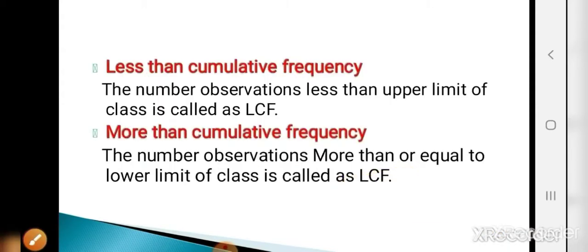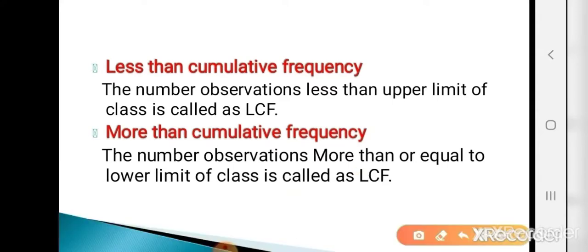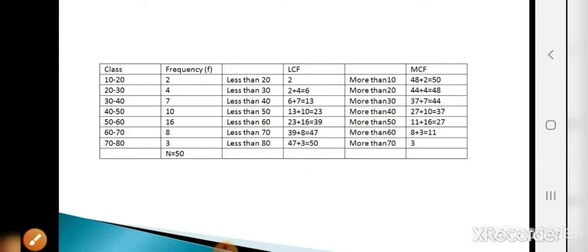The less than cumulative frequency (LCF) is defined as the number of observations less than the upper limit of a class. The more than cumulative frequency (MCF) is defined as the number of observations more than or equal to the lower limit of a class. In the previous example, LCF values are 2, 6, 13, 23, 39, 47, 50 and MCF values are 50, 48, 44, 37, 27, 11, 3.